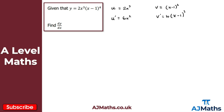Now we have u, u prime, v, and v prime — everything we need to find dy/dx using the product rule. dy/dx equals u·v prime plus v·u prime. So u·v prime is 2x cubed multiplied by 4(x minus 1) to the power of 3, and 2 times 4 gives us 8x cubed multiplied by (x minus 1) cubed.